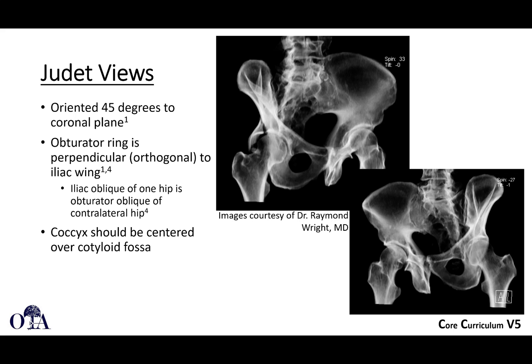Judet views are oblique images oriented 45 degrees to the coronal plane. You tilt the patient using a wedge block to one side, then to the other side, and shoot straight down with your x-ray beam. These images shown here look like radiographic reconstructions from a CT scan, which can be reconstructed to look like plain radiographs. Nevertheless, this is a very nice illustration to show you the two views.